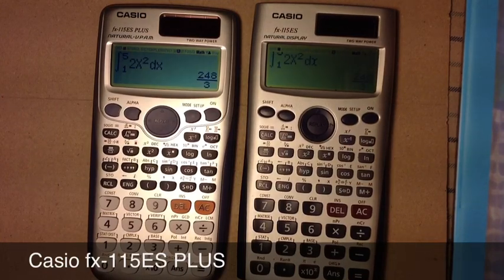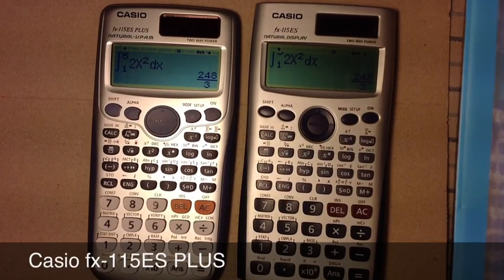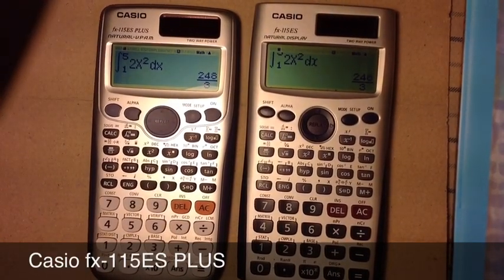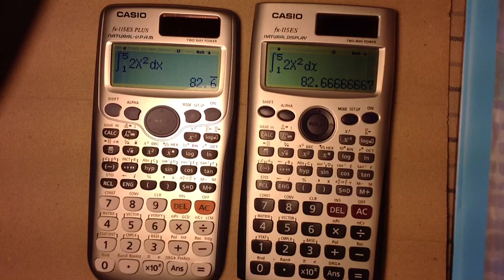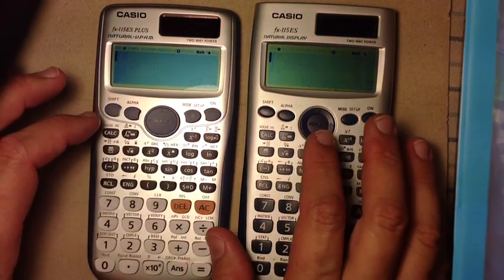The newer model, the one to the left, definitely is slightly faster than the one on the right. What I found out by reading the manual, and I found out it works for both models, is you can force a decimal approximation by pressing shift equals. And I'll show you something like that now.